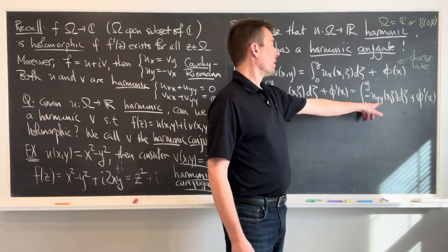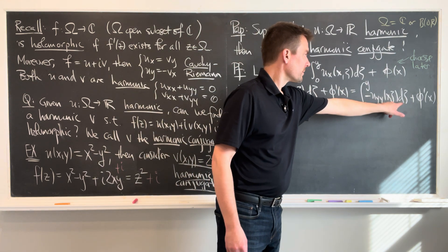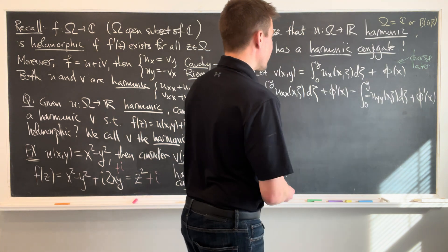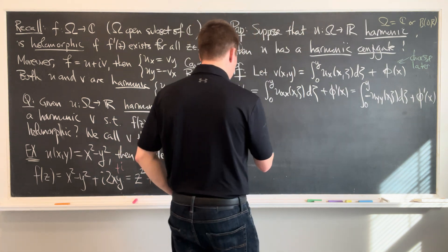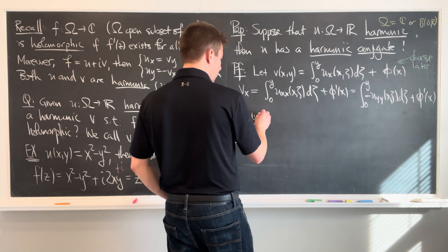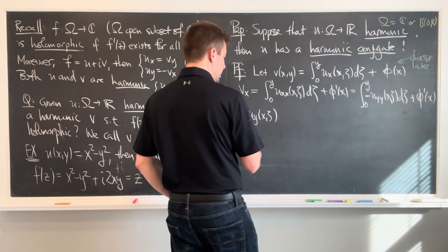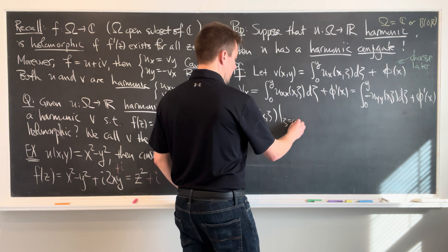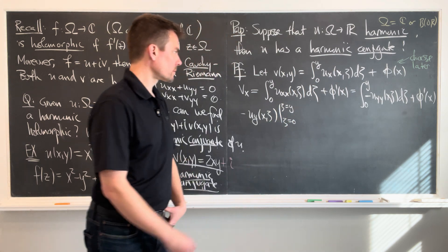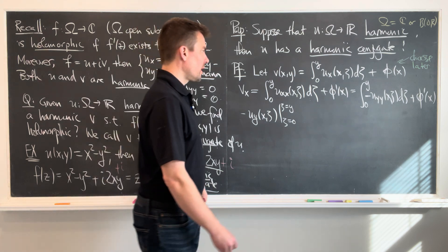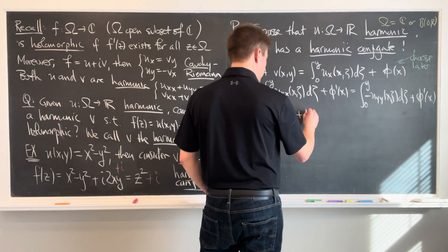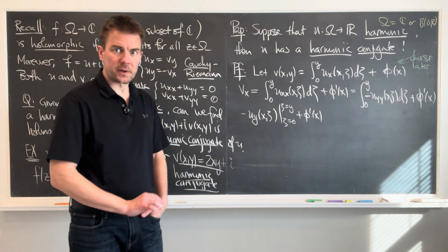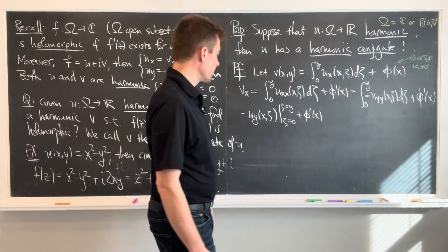Good. All right. Now, I'm very good at integrating out derivatives. So in other words, I can integrate out those derivatives in the second slot. And so what will I get? I'm going to get out of here, so this is negative uy of x and zeta evaluated from zeta equals zero to zeta equals y, plus phi prime. I'm just doing calculus now, just ordinary calculus.